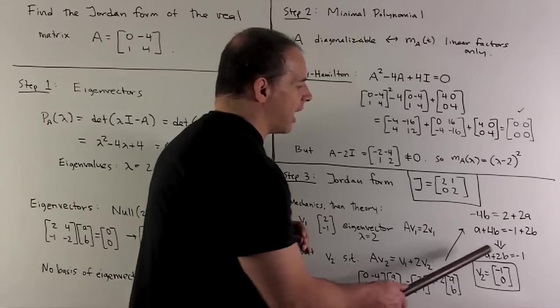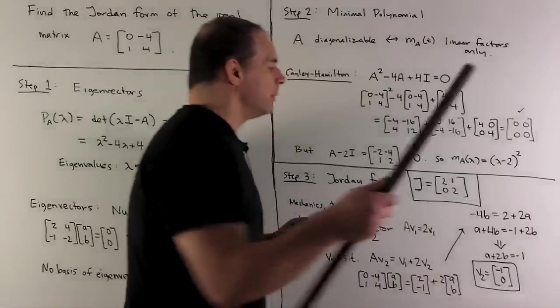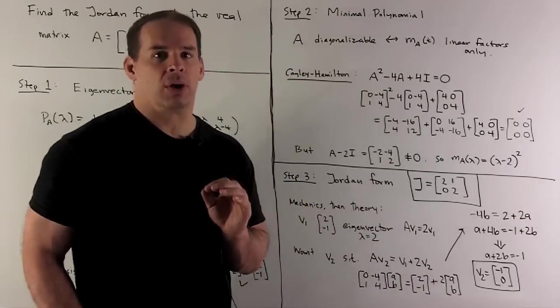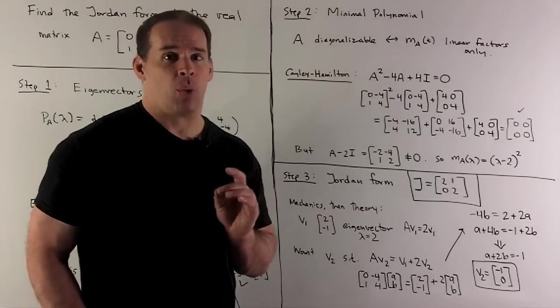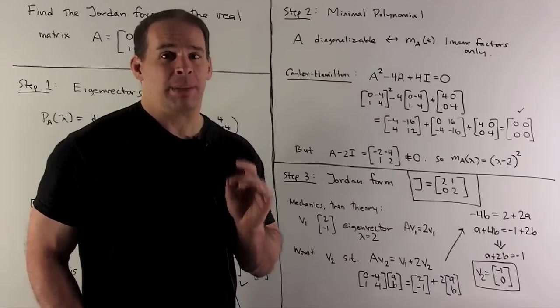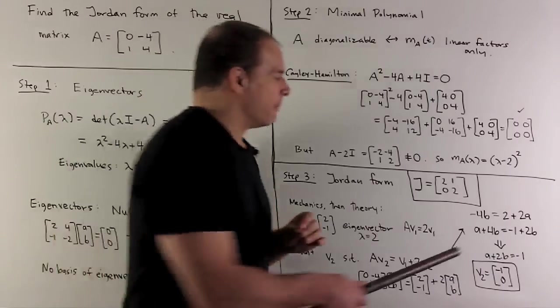When I do that, I'll have A + 2B = -1. So, if I let B be equal to 0, A is going to be equal to -1. And then, my second basis vector is going to be [-1, 0].